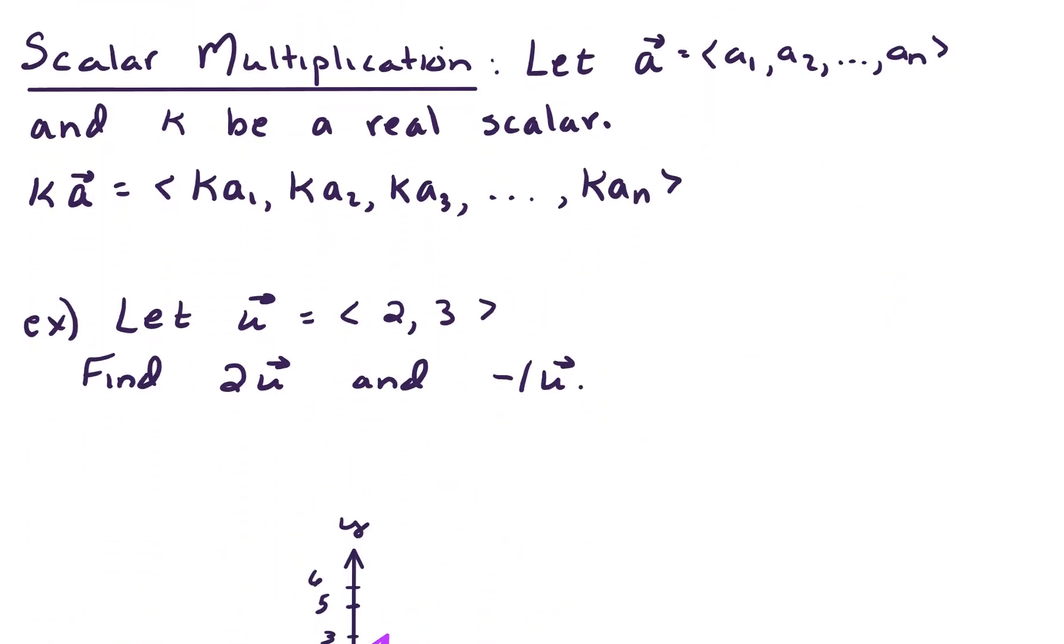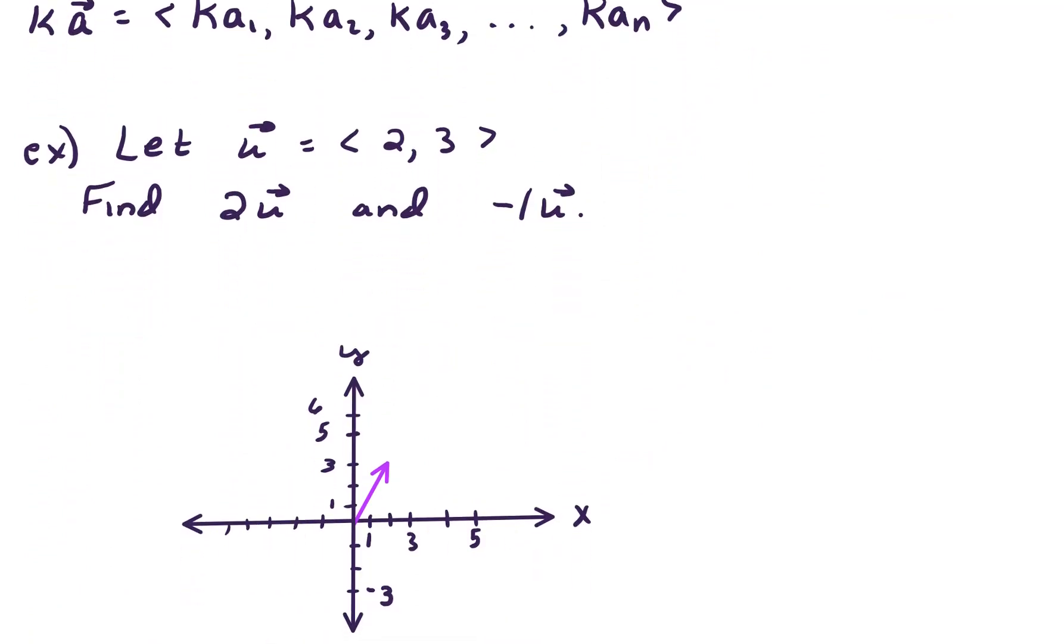Let's take a look at an example here. In this particular example, we're looking at a vector u, which is 2, 3. That has been plotted for us. That's u. Now let's find 2u. To find 2u, that's going to be 2 times the vector 2, 3. Scalar multiplication, multiplying that 2 times each component, we're going to get 4, 6. Plotting that vector, we're going to go over 4, up 6. That's just going to be a stretching out of vector u. It's a stretch by a factor of 2, and that's what scalar multiplication does.